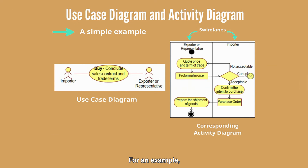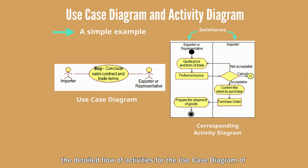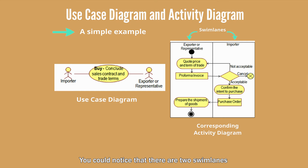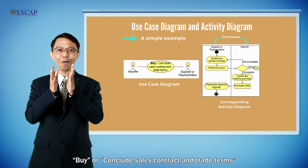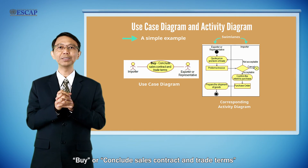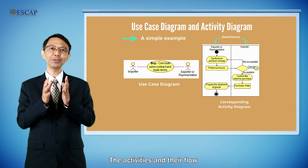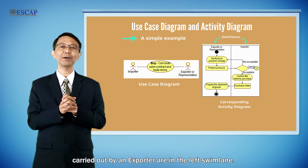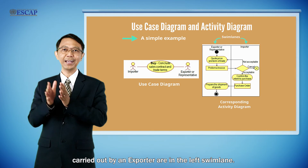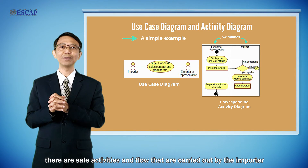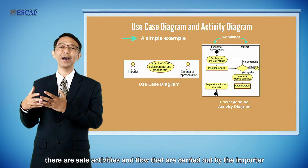As an example, the activity diagram shown in this figure illustrates the detailed flow of activities for the use case of 'Conclude Sales Contract and Trade Terms.' You can notice that there are two swim lanes within this activity diagram, since the 'Buy' use case involves two actors — exporter and importer. The activities and their flow carried out by the exporter are in the left swim lane, and those carried out by the importer are in the right swim lane.